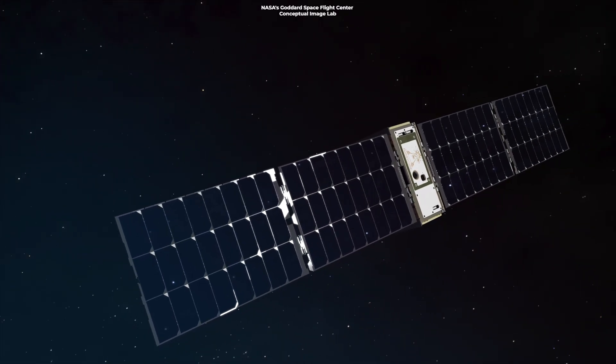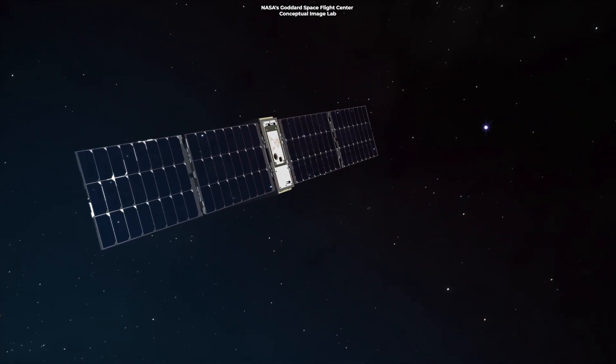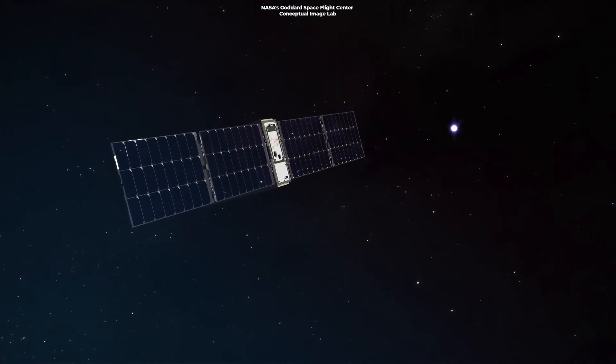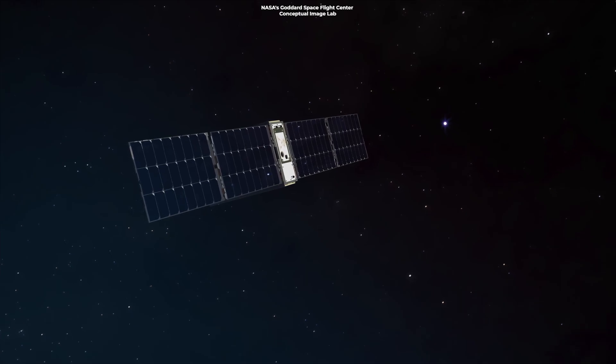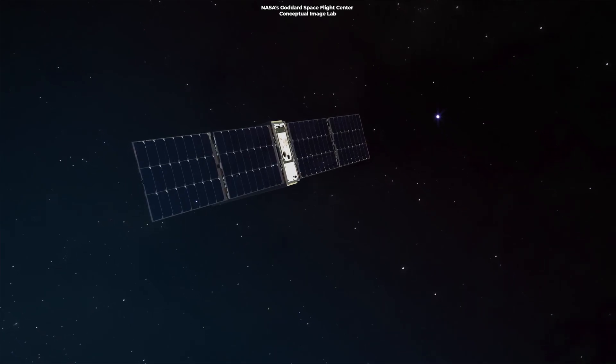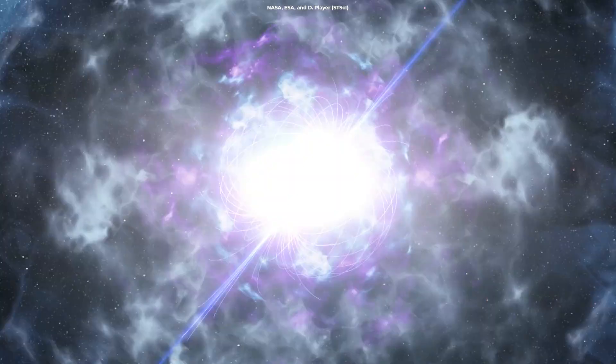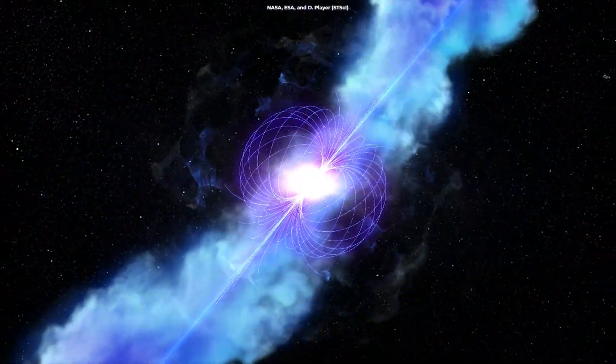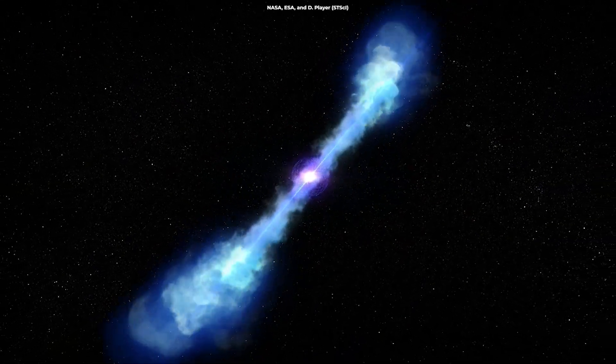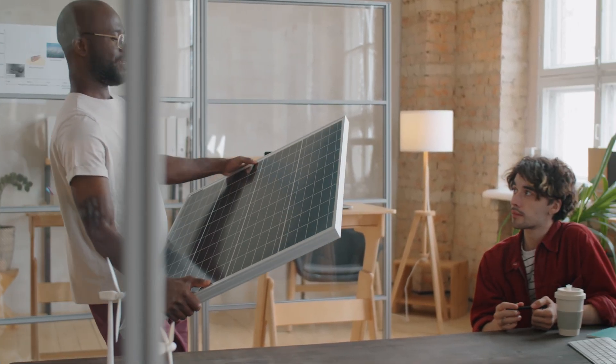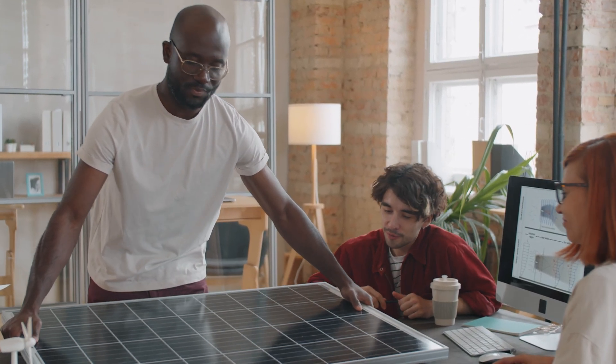But while GRBs release an insane amount of energy, they're more like cosmic one-hit wonders lasting only milliseconds to a few minutes. That makes them the most powerful energy sources in terms of peak luminosity, but not when it comes to their total energy output over time. So don't go canceling your solar panel installation just yet.